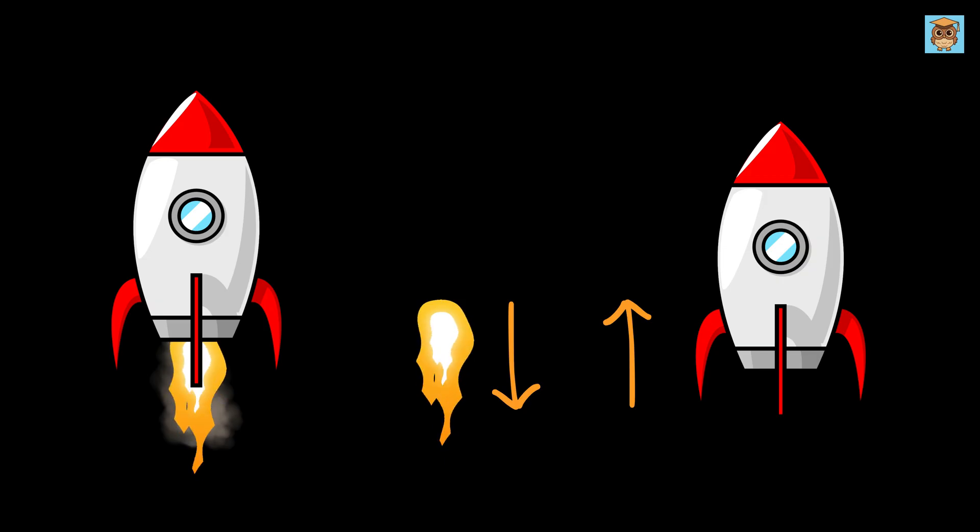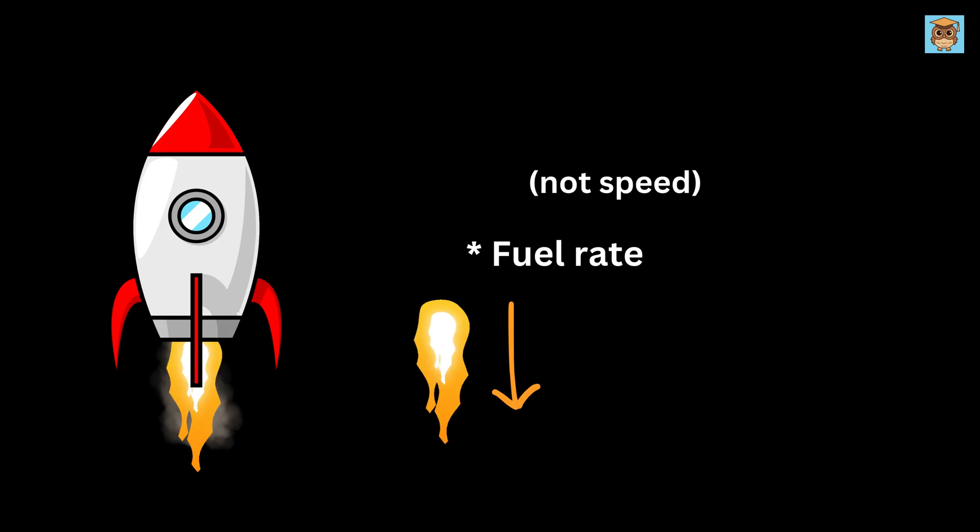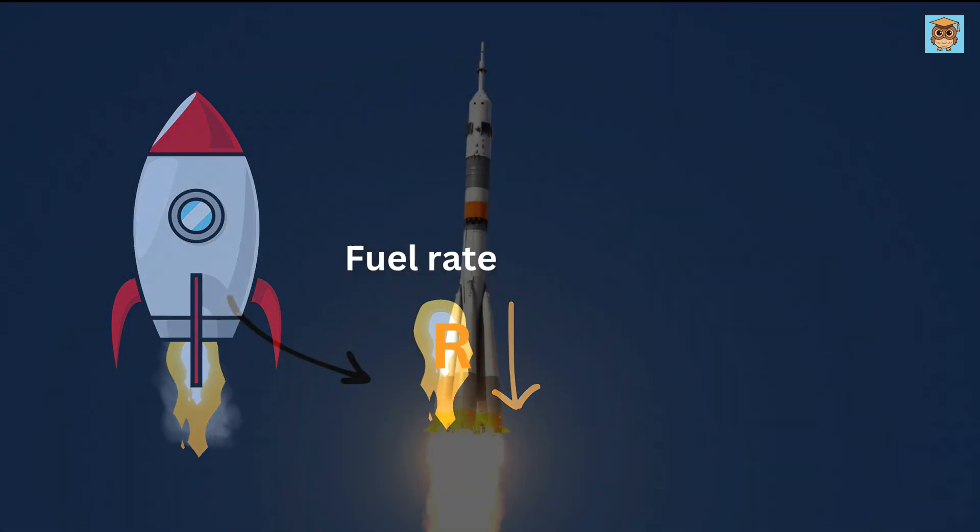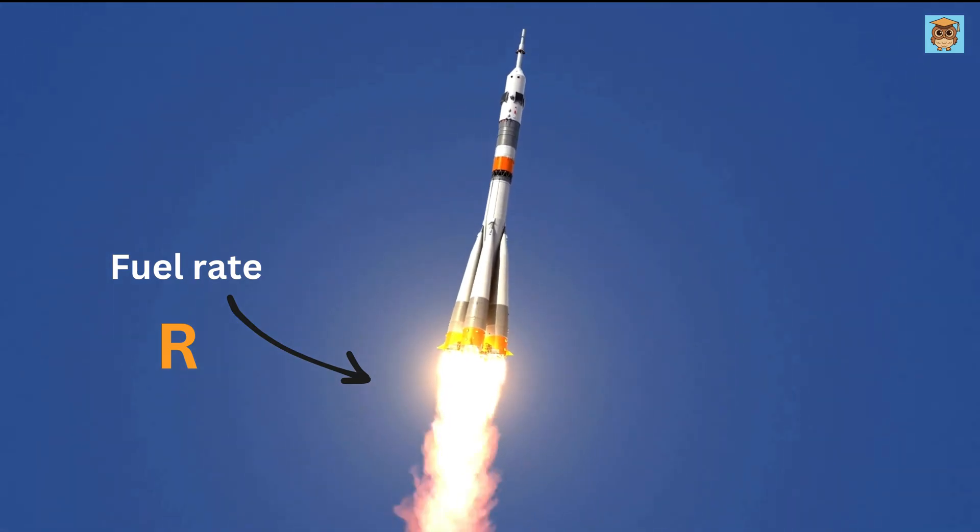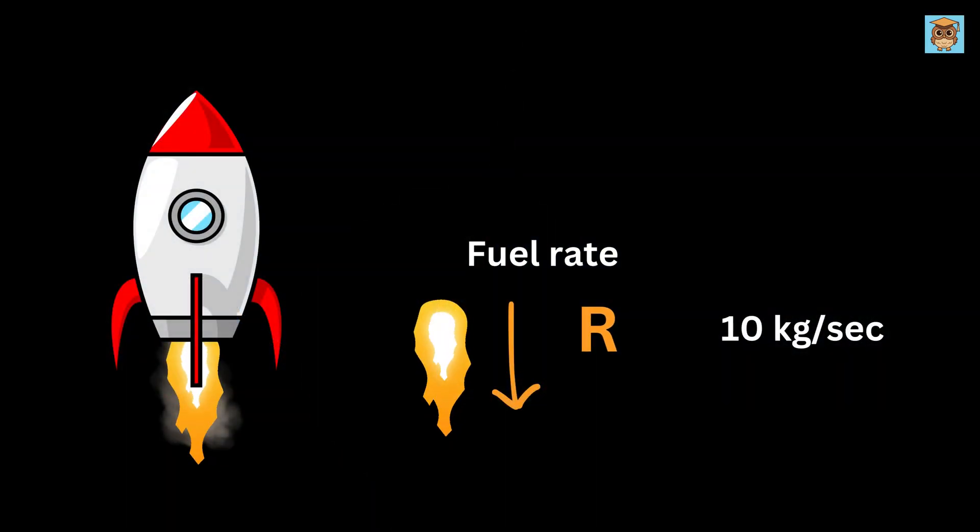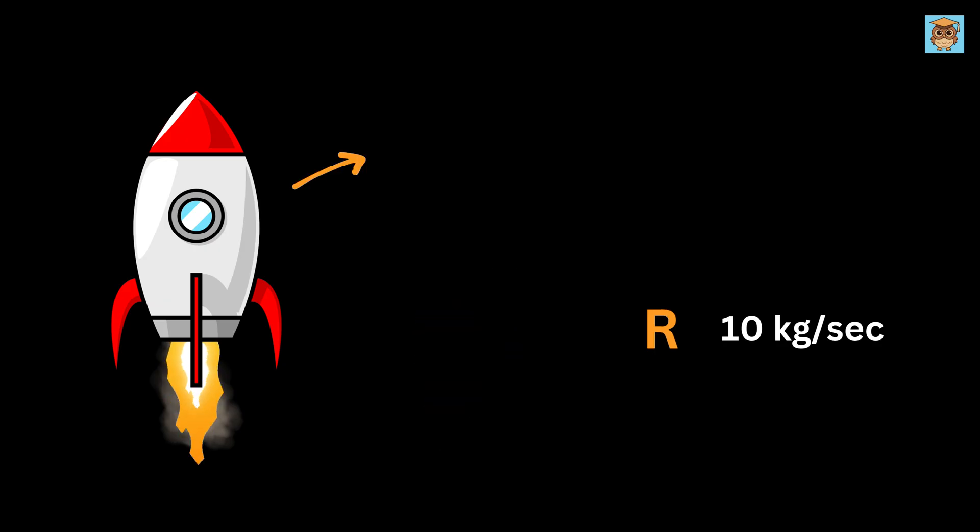When the rocket pushes fuel downward or ejects it, the fuel pushes the rocket back with an equal force propelling the rocket upward. The speed at which the fuel is ejected out is called r, which we will assume to be constant for our case. It simply tells us how much fuel the rocket uses every second. If r is 10 kilograms per second, that means the rocket burns and throws out 10 kilograms of fuel every second.